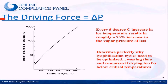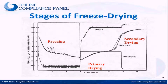The driving force of freeze drying is that change in pressure. We have a high pressure system at the surface of the product where all that water vapor is being generated, and a low chamber pressure at the surface of the condenser where that water vapor collects. We want to keep a wide delta P — a wide change in pressure — between those two.